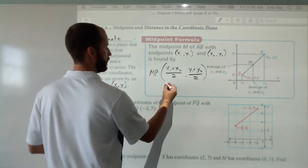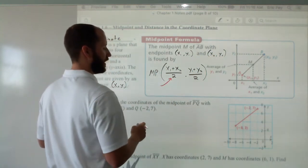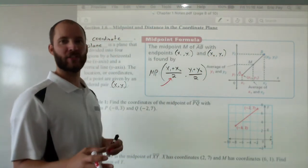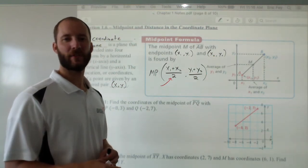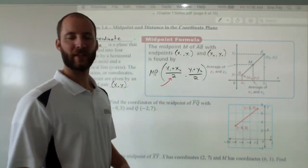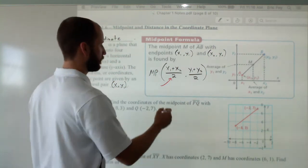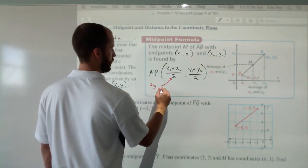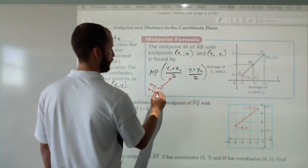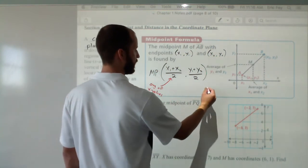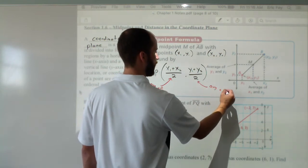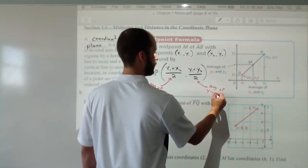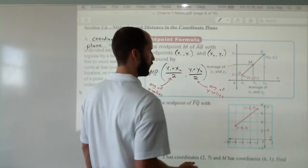But really what we're doing, if I told you to take all the objects you have, add them up, and then divide by how many objects you have, you would know what that is. It's called an average. So we're finding the average of the x values. We're finding the average of the y values.